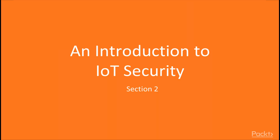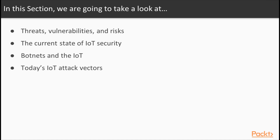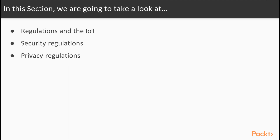Welcome back to an introduction to IoT security. Now that we've laid the groundwork with an understanding of the different types of IoT systems that are out there and what makes up an IoT system, we can start to think about how you might secure an IoT system. We'll be talking specifically about threats, vulnerabilities, and risks, the current state of IoT security, botnets in the IoT and today's IoT attack vectors, as well as security and privacy regulations in the IoT.